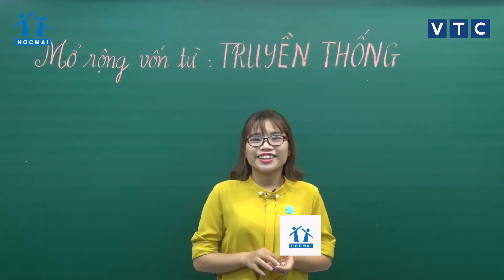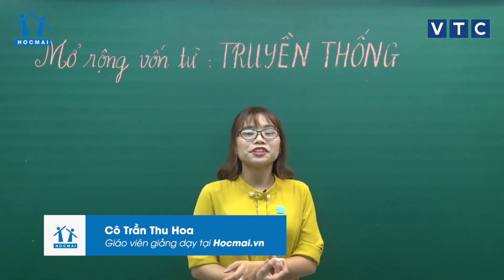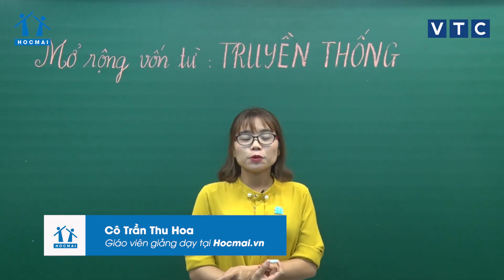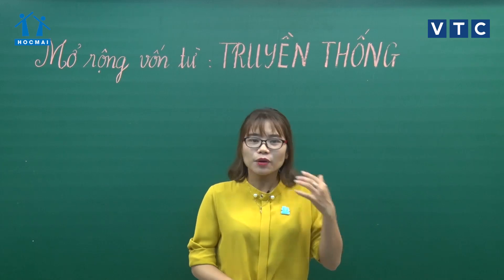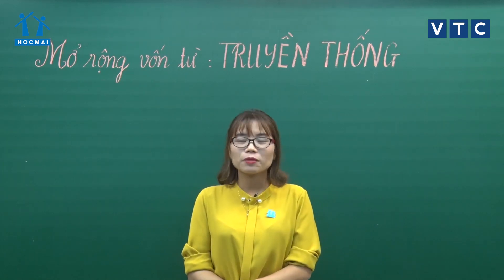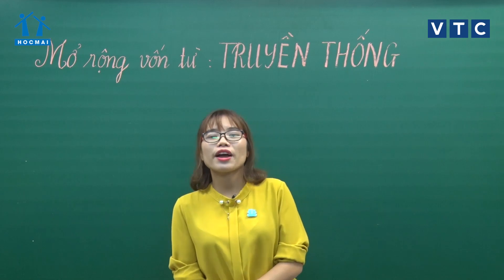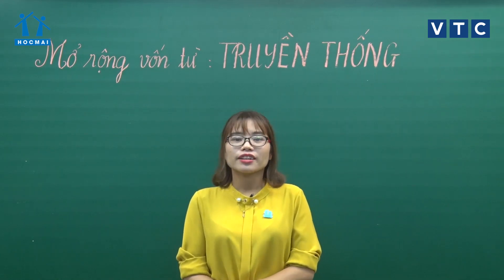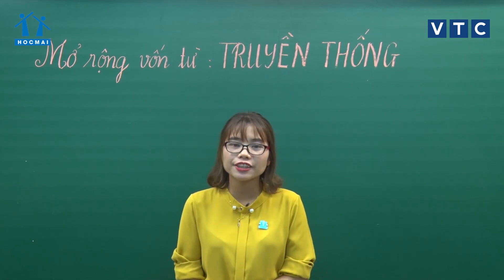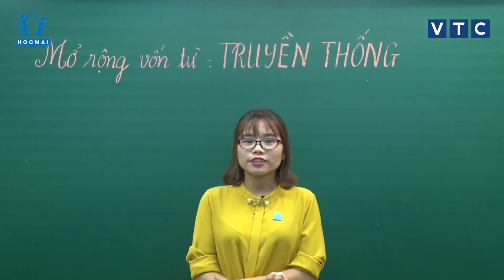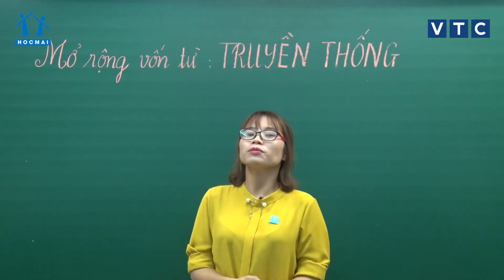Chào tất cả các con. Nhắc đến dân tộc Việt Nam dải đất hình chữ S, từ đỉnh đầu Lũng Cú, Hà Giang đến vùng đất mũi Cà Mau, chúng mình thấy đâu đâu cũng có những cảnh đẹp. Nhưng khi nói đến Việt Nam, ngoài việc nhắc đến cảnh đẹp, người ta còn nhớ đến đó là một đất nước giàu truyền thống văn hiến.